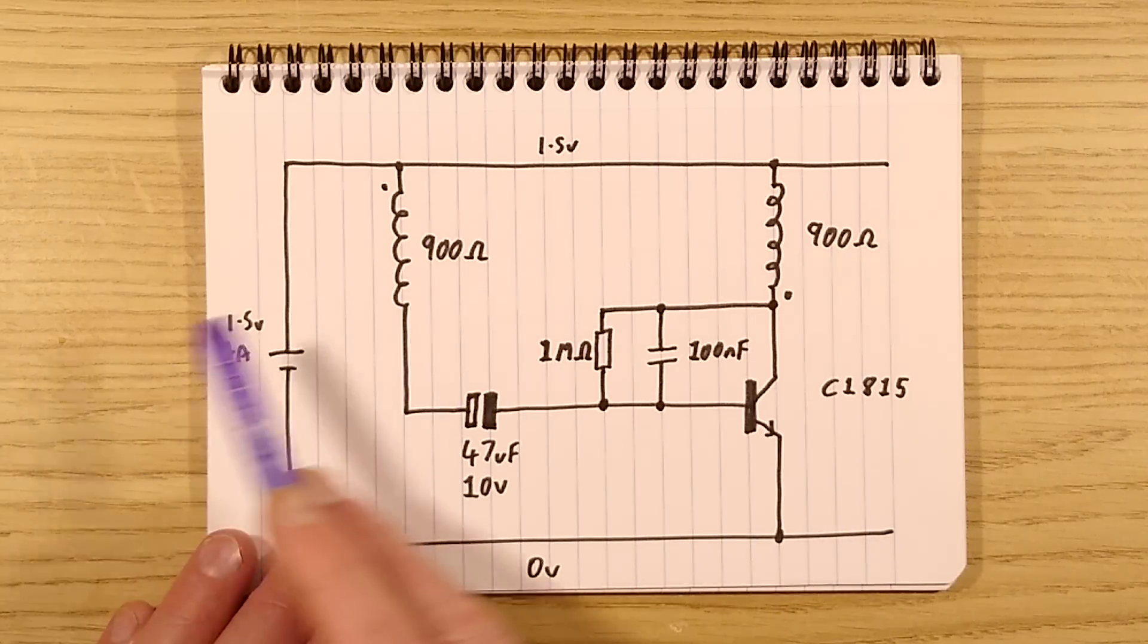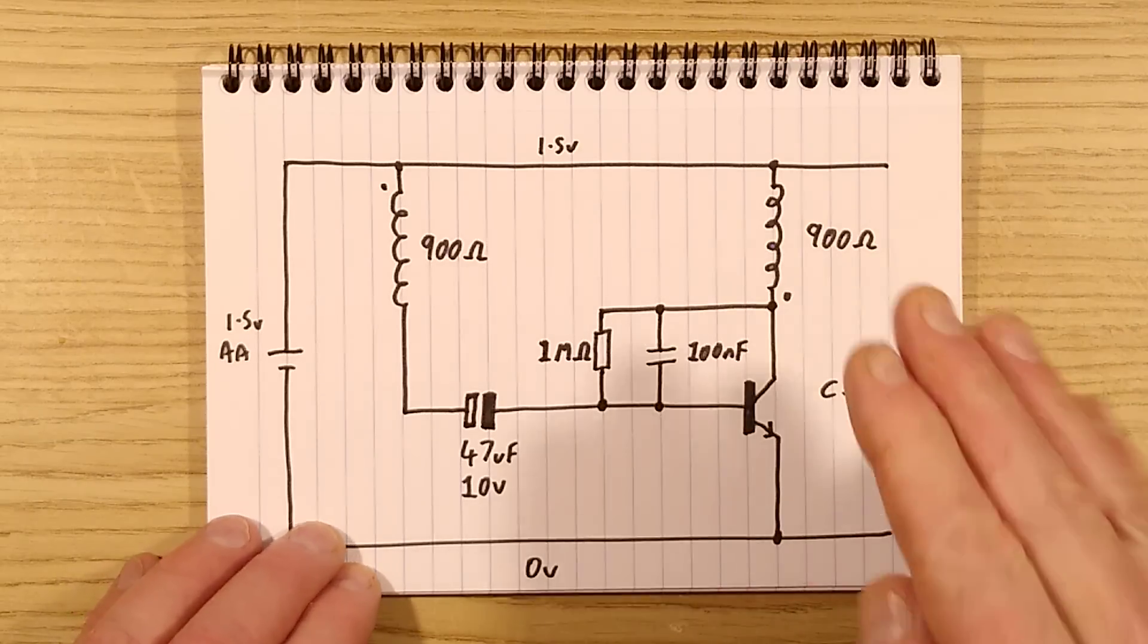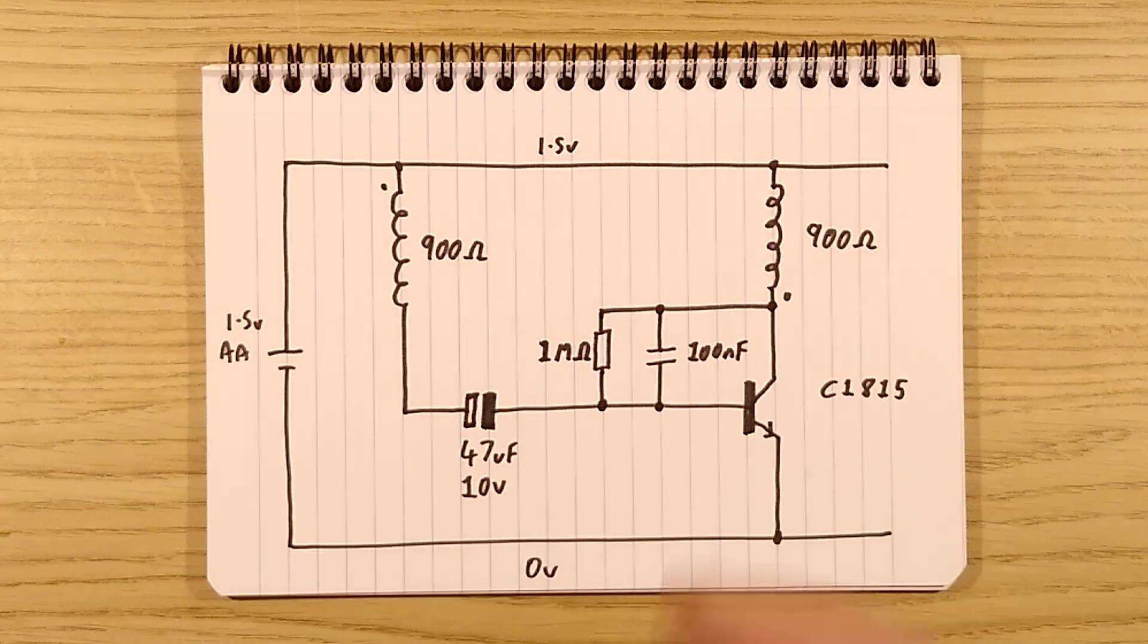So basically that means as soon as the pendulum swings past it gives it one decisive controlled pulse of magnetic field just to keep it swinging as it passes.